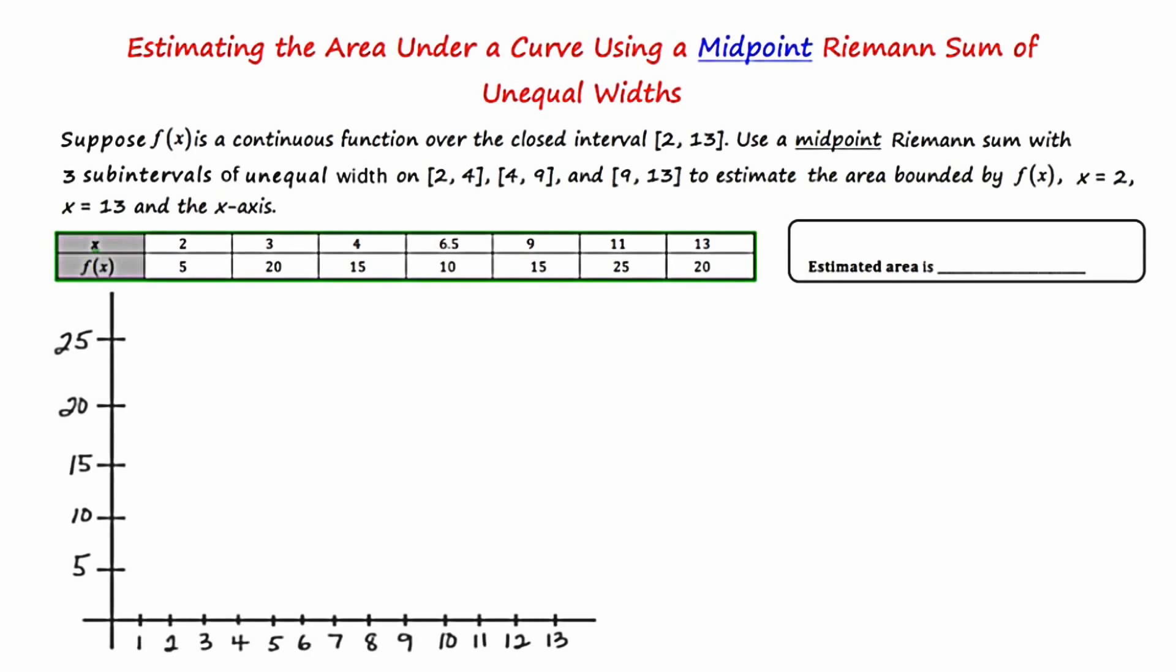Let's read the question. Suppose f of x is a continuous function over the closed interval from 2 to 13. Use a midpoint Riemann sum with three sub-intervals of unequal width on 2 to 4, 4 to 9, and 9 to 13 to estimate the area bounded by f of x, x equals 2, x equals 13, and the x-axis.